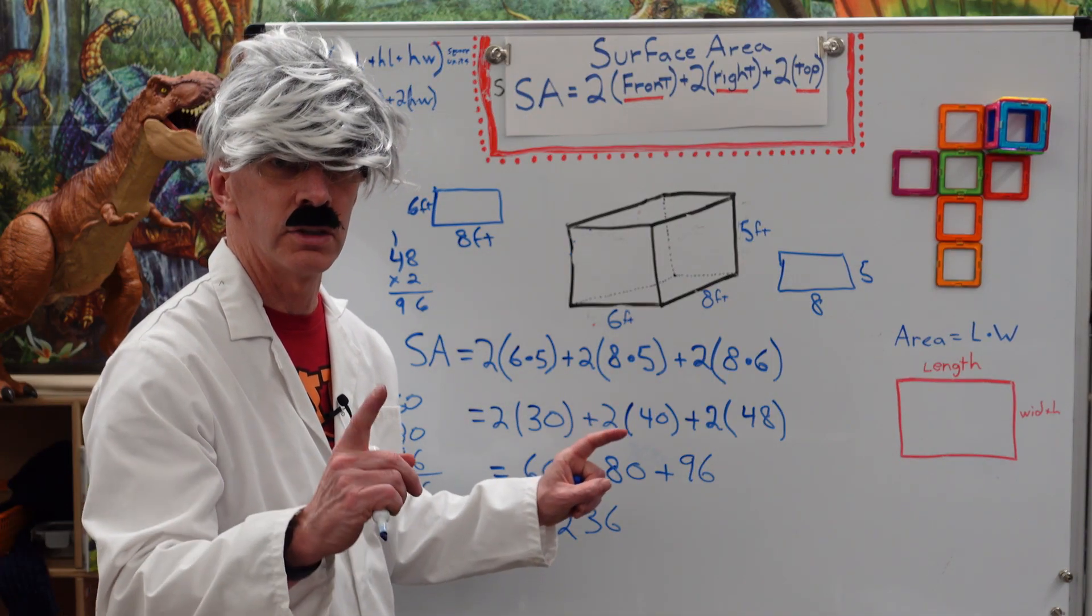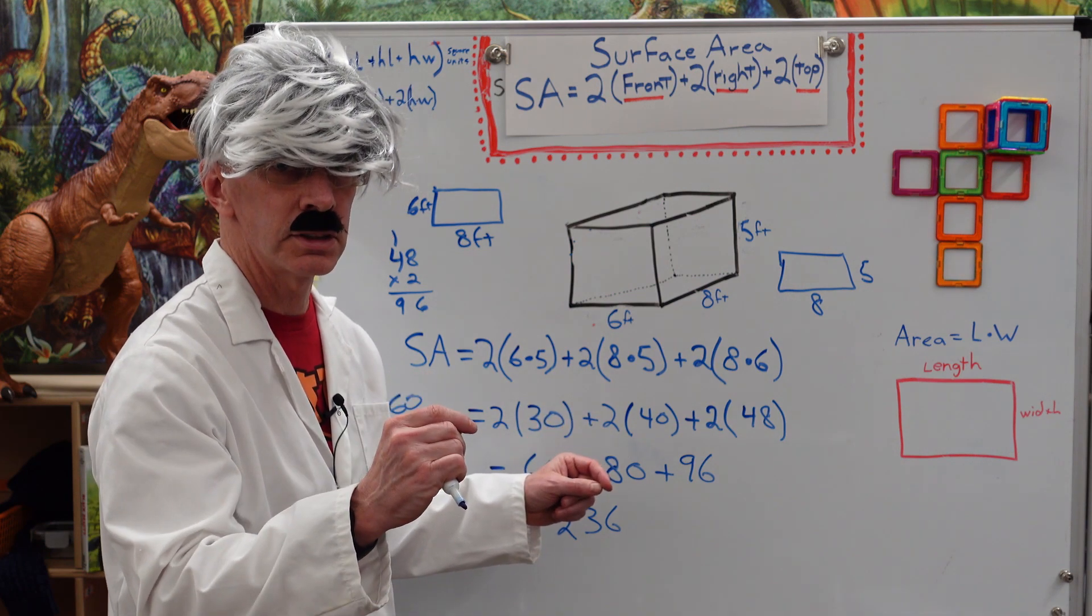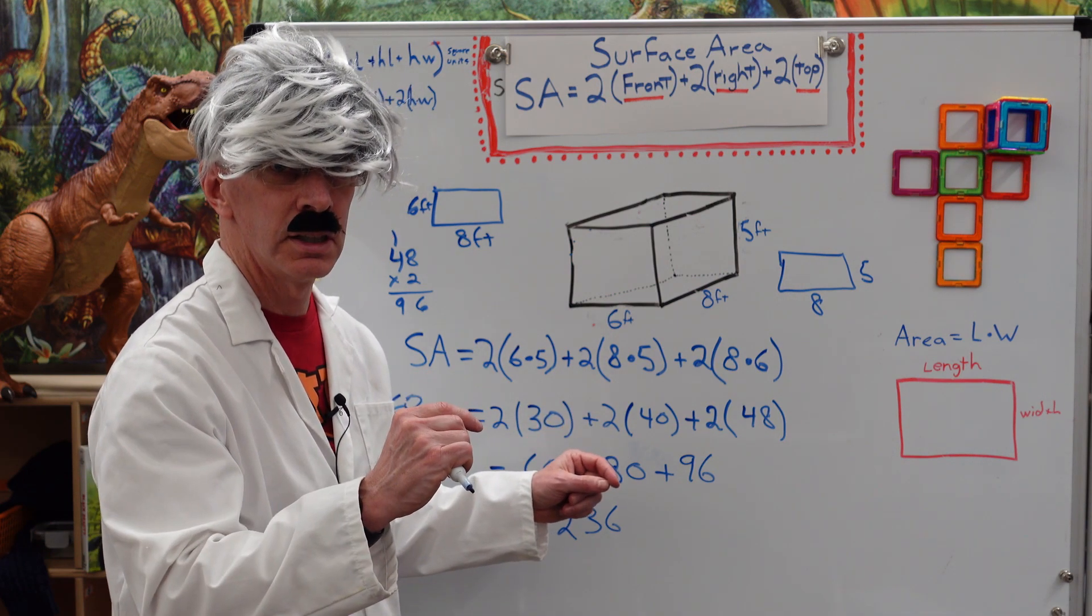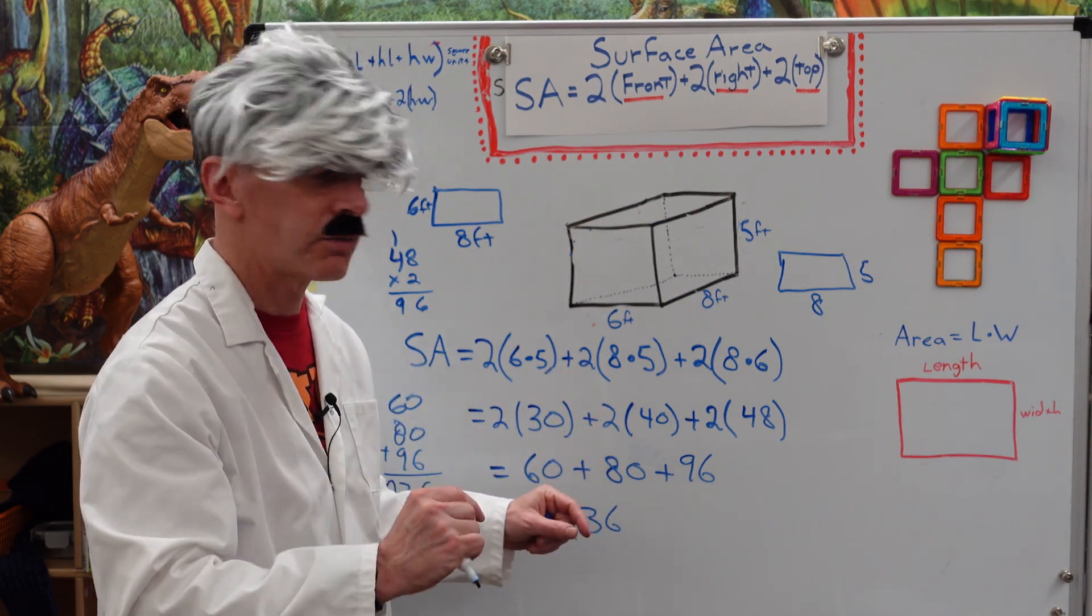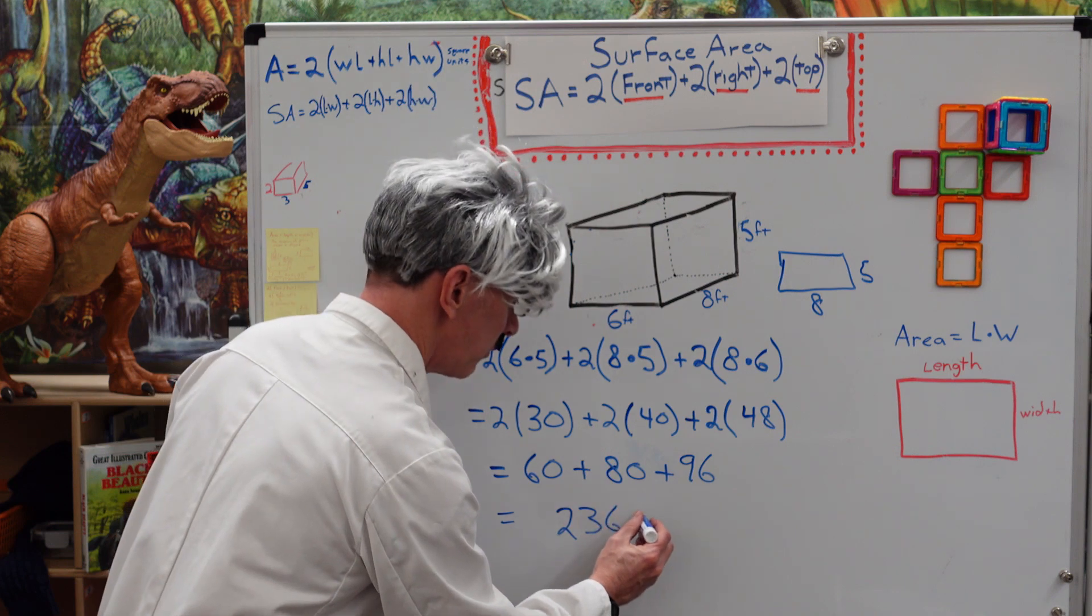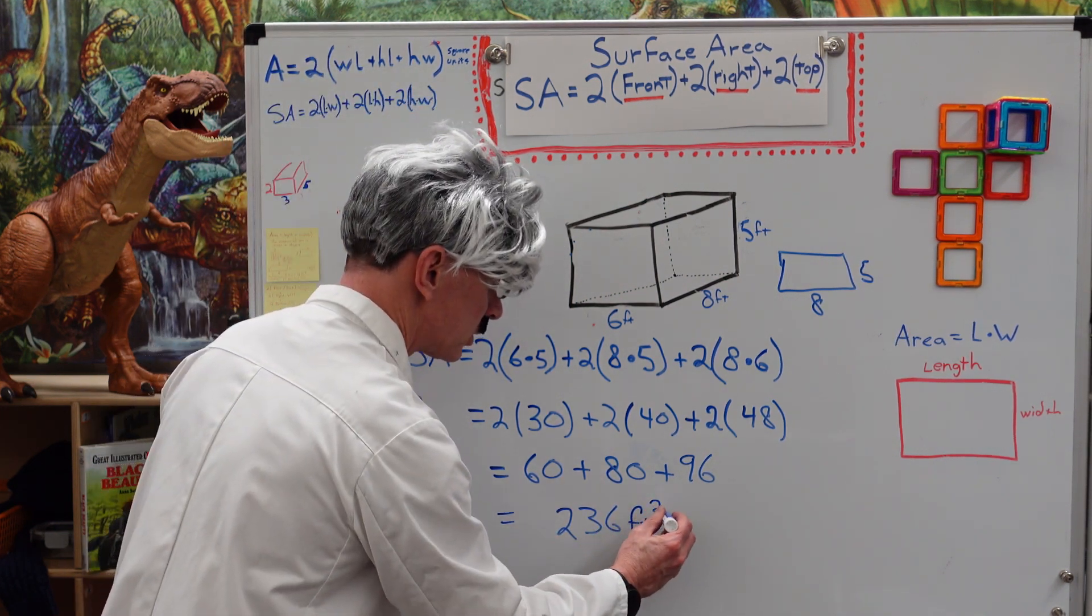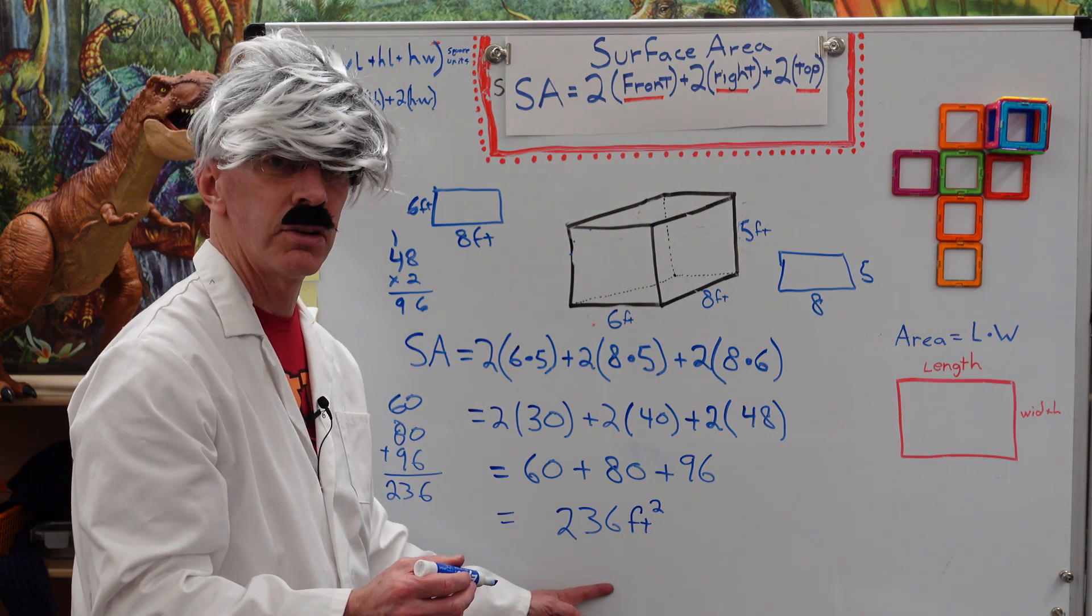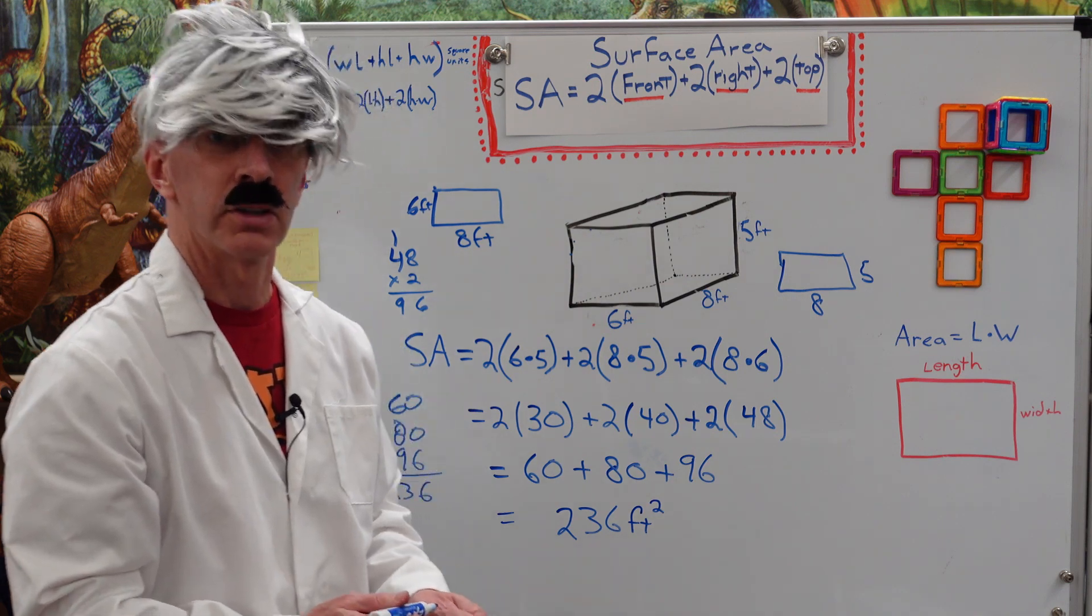Do not forget the units. What is our units? Is it inches? Is it centimeters? Is it milliliters? Is it millipedes? Or is it feet? Very good. It's feet. So, we put the feet right here. And do not forget the square. So, this is 236 square feet. Very good.